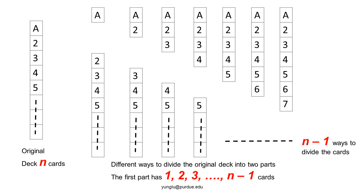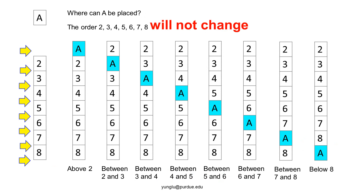Next, let's consider how to interleave the cards in the simplest case. There is only one card on the left hand and seven cards on the right hand. The only card may be put on top of the seven cards, inserted between two of them, or at the bottom. Notice that the order of the seven cards will not change.